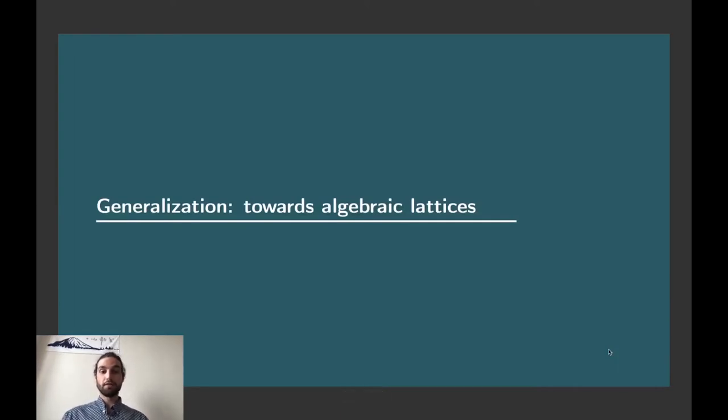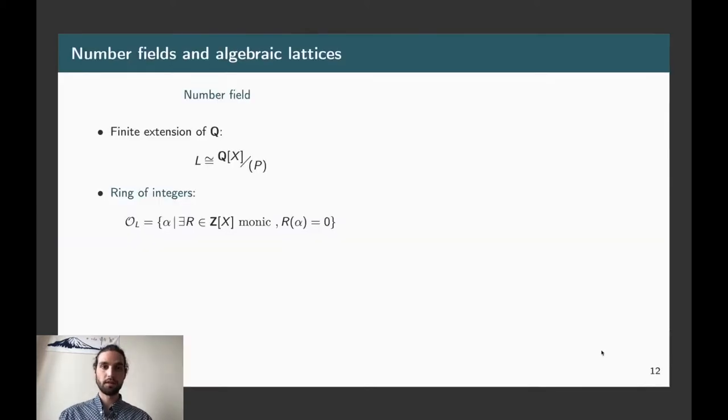So now, let's focus on the main purpose of this work and see how we can provide a reduction algorithm which is efficient for some generalization of the notion of lattice, which are algebraic lattices. So to define what an algebraic lattice is, basically we need to set up first what's a number field. So it's a finite extension of the field of rationals Q, which can be realized as the quotient of Q[x] by the ideal generated by some polynomial P. Inside this field, we can find a particularly interesting ring, which is a ring of integers and can be defined as the set of elements of the number field which are annihilated by some monic polynomials with integral coefficients.